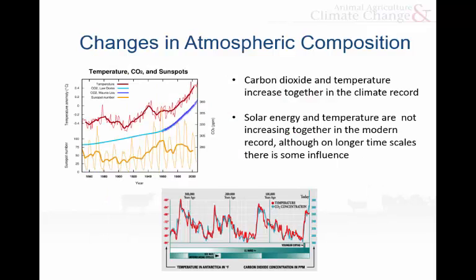We know that if we look on the long term — on the ice age, tens of thousands of years scale — carbon dioxide and temperature increase together. You can see that in the lower graph: temperatures in red, carbon dioxide in green, and they vary very closely together. So one of the questions has been a chicken-or-egg question: is the temperature changing the carbon dioxide, or is the carbon dioxide changing the temperature? The more recent studies have shown that the temperature is leading the carbon dioxide, but they're linked so closely together that it's hard to show exactly what's going on.